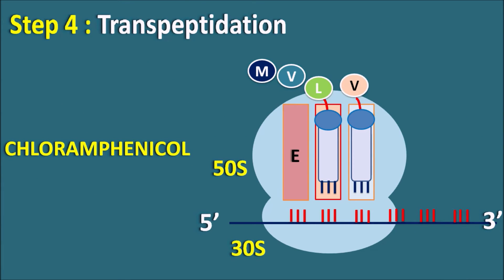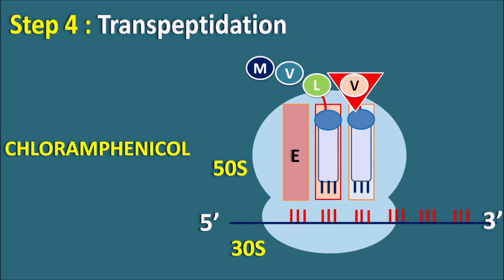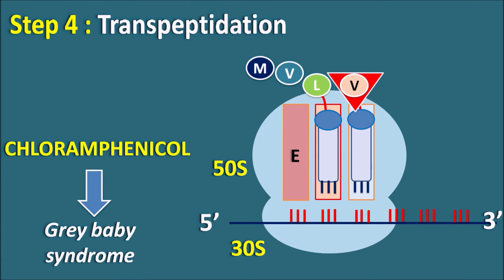Step four is transpeptidation. Chloramphenicol is a drug that inhibits transpeptidation. It interacts with the 50S subunit — unlike aminoglycosides and tetracyclines which interact with the 30S subunit. Chloramphenicol forms a complex with the 50S subunit and inhibits the peptidyl transferase enzyme, so the peptide chain on the P site cannot form a peptide linkage with the amino acid at the A site. Chloramphenicol can also inhibit mitochondrial ribosomes in mammalian cells, producing gray baby syndrome in infants due to cyanosis and reduced oxygen supply, and therefore should not be given to infants.